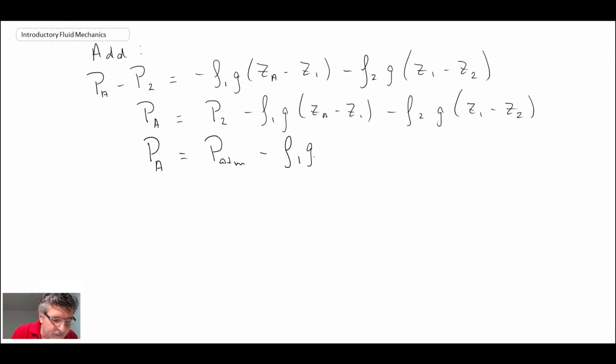Minus the density of fluid one times the difference from z_A to z₁, the first interface between the red and the blue liquid, and then minus ρ₂g and then z₁ minus z₂. Those are the last interface that we had with the air. So what this tells us is that in order to measure the pressure at A...